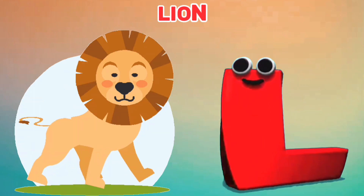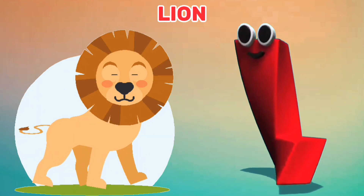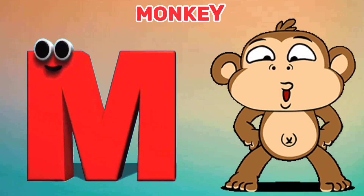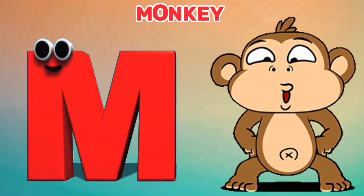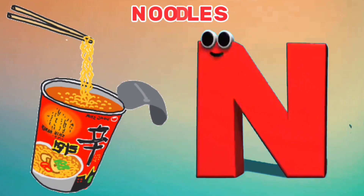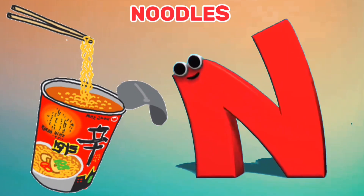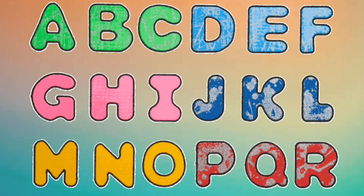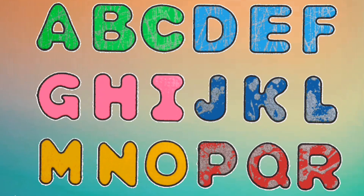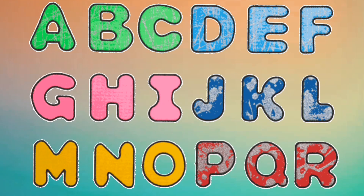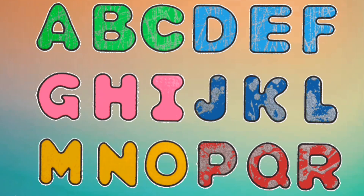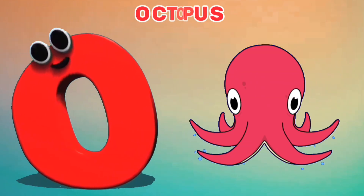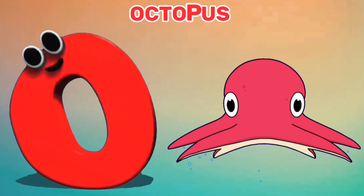L is for Lion. L, L. L. M is for Monkey. M, M. Monkey. N is for Noodles. N, N. N. It's the letters of the alphabet — sing it!